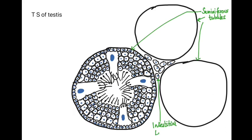The cells in between the seminiferous tubules are the interstitial cells or the Leydig cells. These cells produce the male hormone testosterone.